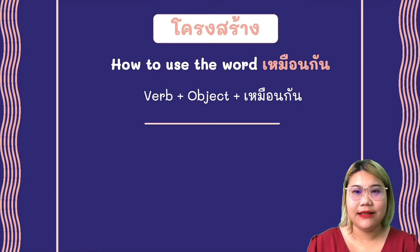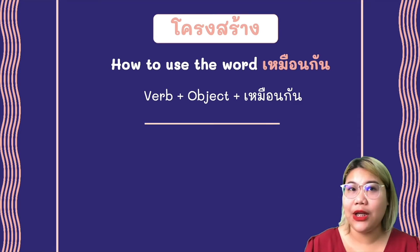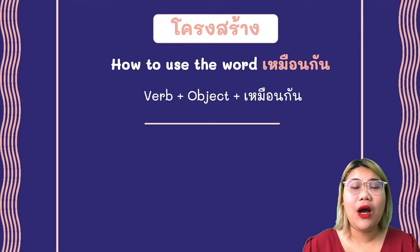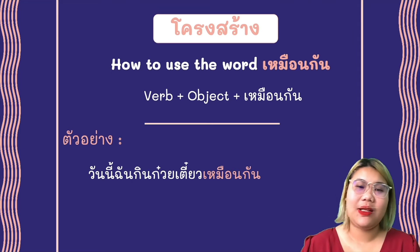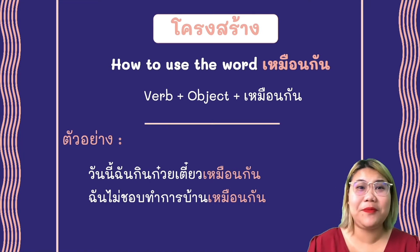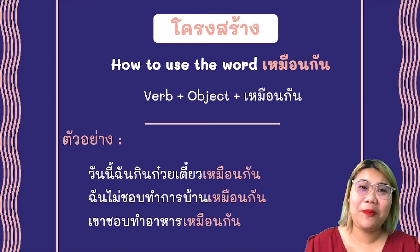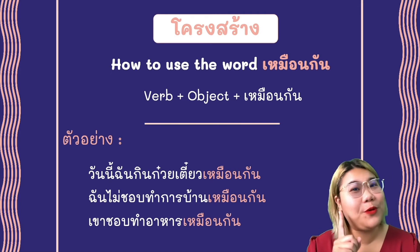The next pattern is how to use the word เหมือนกัน, which means 'also,' 'as well,' or 'too.' We put the word เหมือนกัน at the end of the sentence. We can say any subject, the verb, the object, and then the word. Let's see some examples: วันนี้ ฉันกินกว้ยเตียว เหมือนกัน — Today I also eat noodle. ฉันไม่ชอบทำการบ้านเหมือนกัน — I don't like to do homework too. เขาชอบทำอาหารเหมือนกัน — He/she likes to cook as well. เหมือนกัน is always put at the end of the sentence.